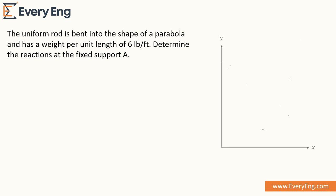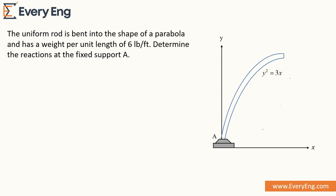In this question, there is a uniform rod that is shaped into a parabola whose weight per unit length is given as 6 pounds per feet. We need to calculate the reaction at the fixed support at point A. The equation of the parabola is y² = 3x. The height of the parabola is 3 feet and the length of the parabola is 3 feet.